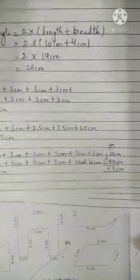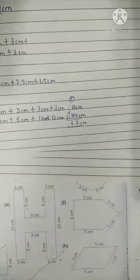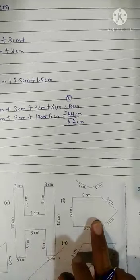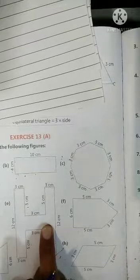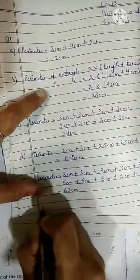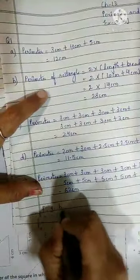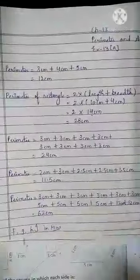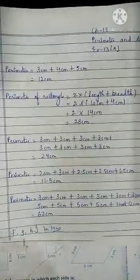We have done parts A, B, C, D, and E. Now F, G, and H you have to do yourself at home as homework. No need to draw the diagram — only solve the question in the notebook. Thank you children.